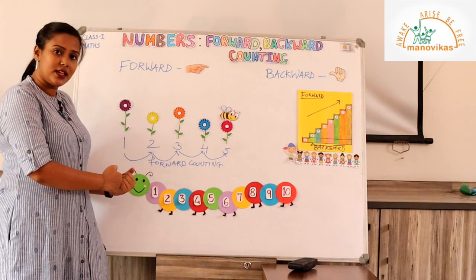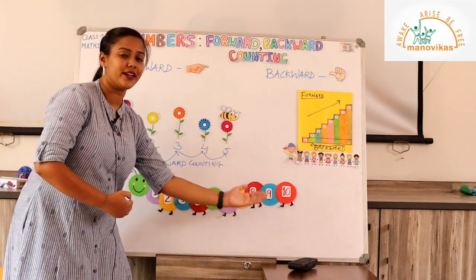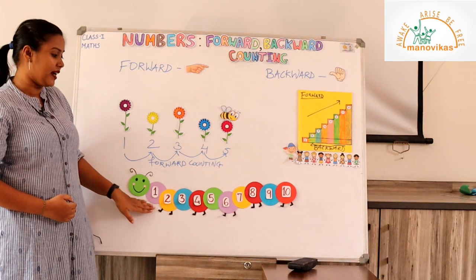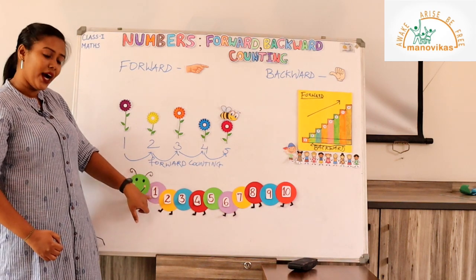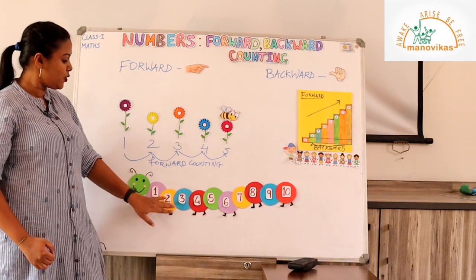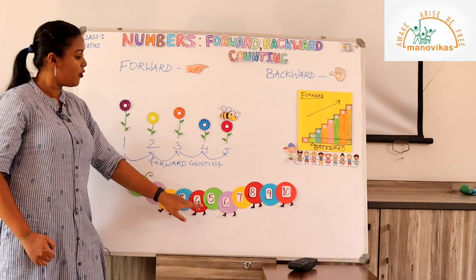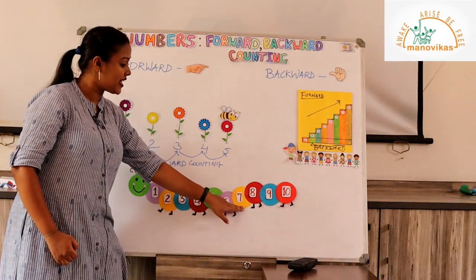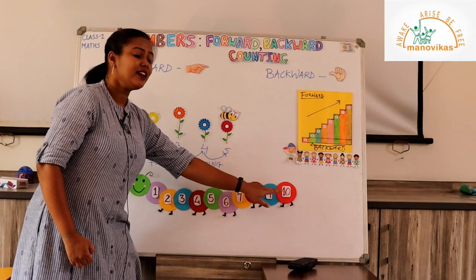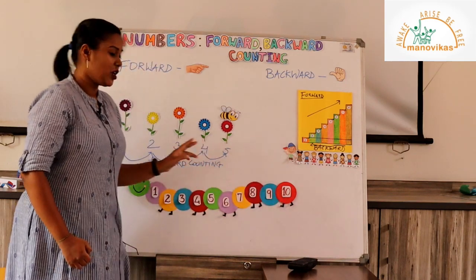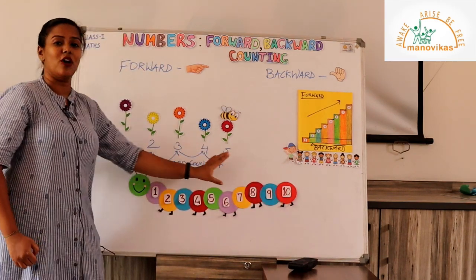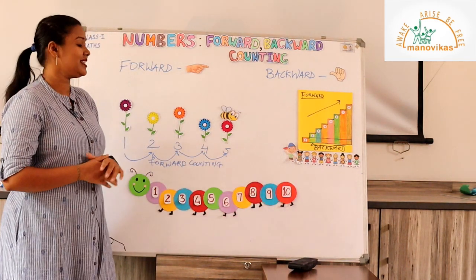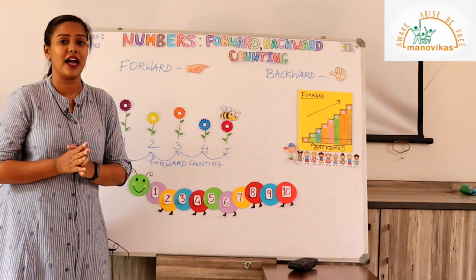We started from backward counting — 10, 9, 8, 7, 6, 5, 4, 3, 2, 1. Now let's count these numbers using forward counting, starting from the smaller number: 1, 2, 3, 4, 5, 6, 7, 8, 9, 10. This is called forward counting.